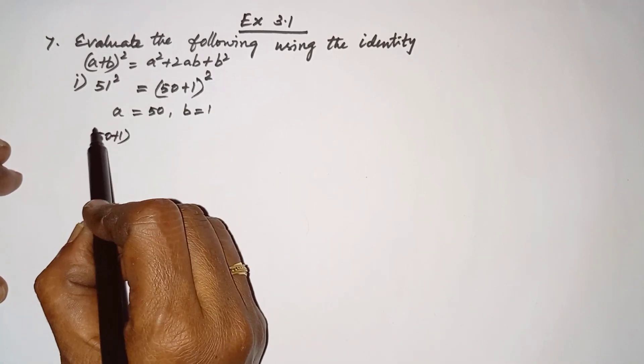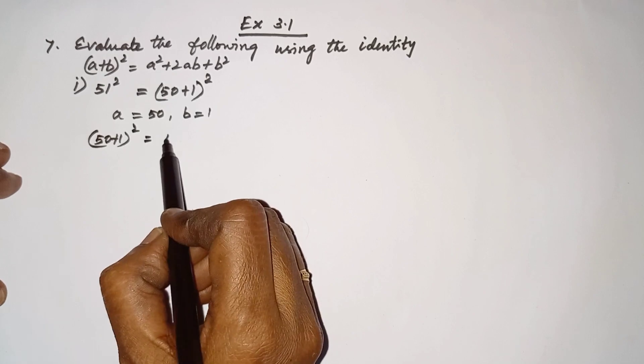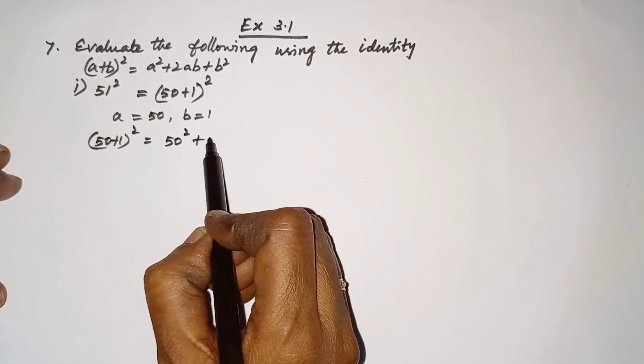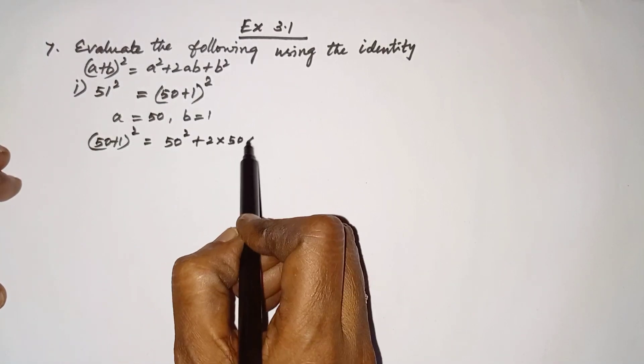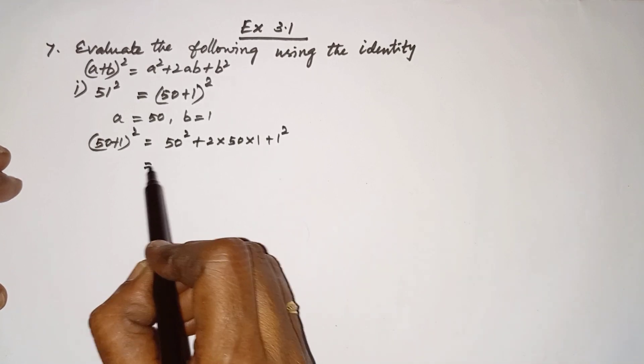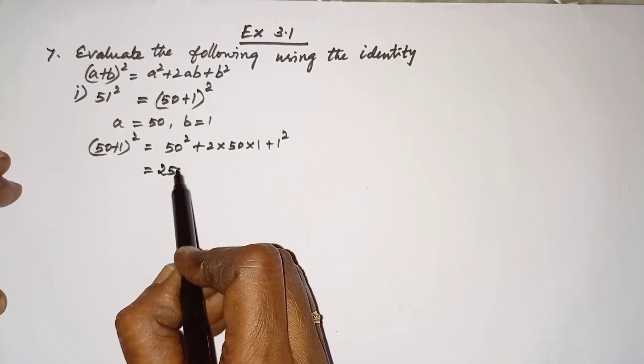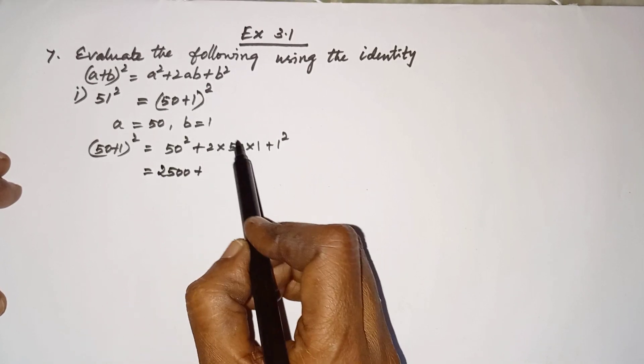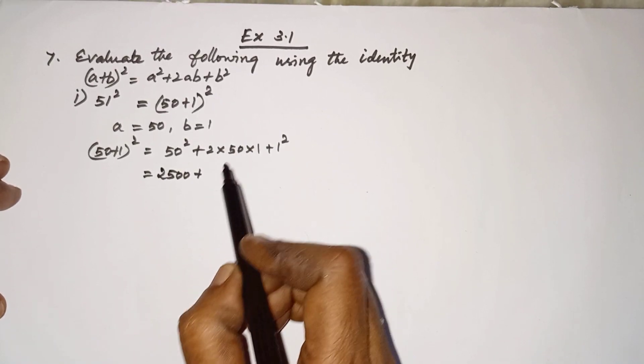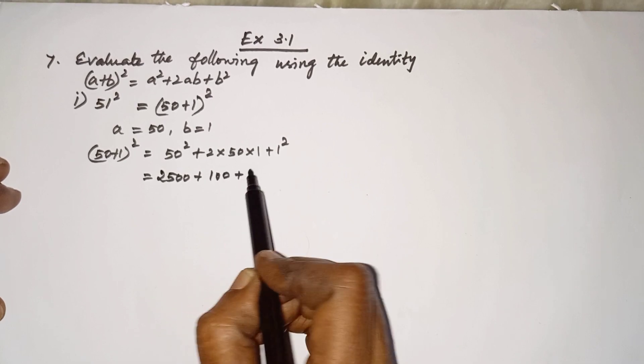it can be written as 50² + 2 × 50 × 1 + 1². So 50² = 50 × 50 = 2500, plus 2 × 50 = 100 × 1 = 100, plus 1²...